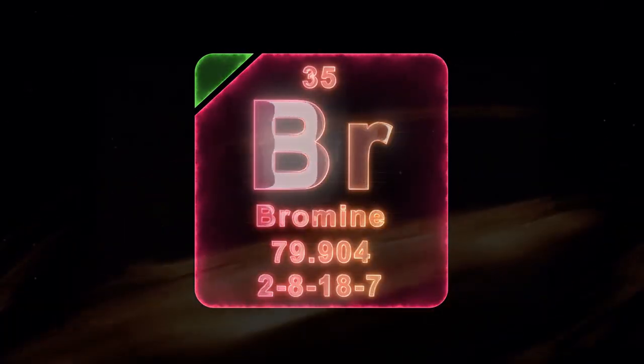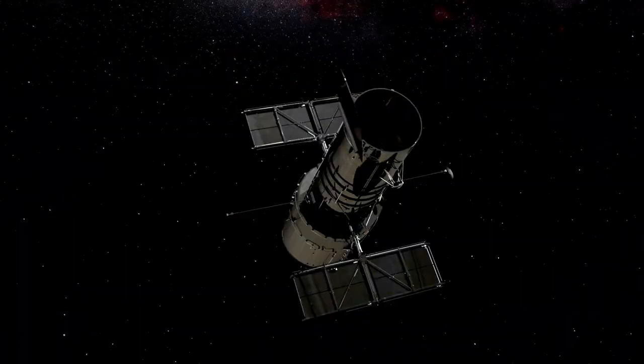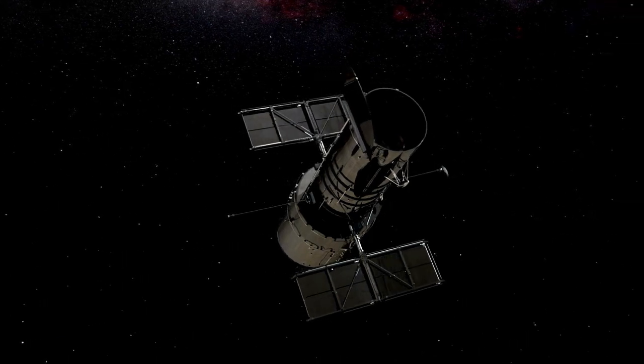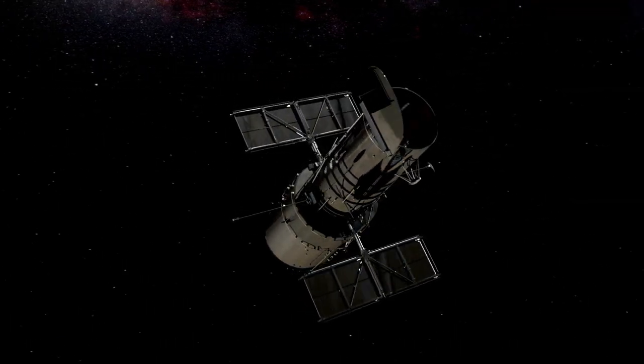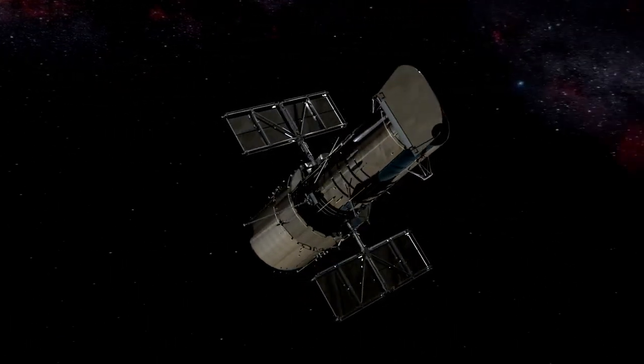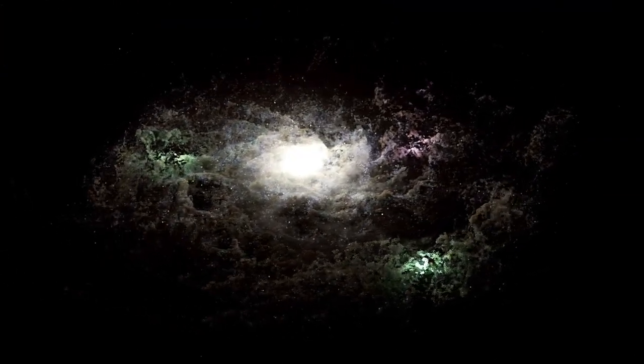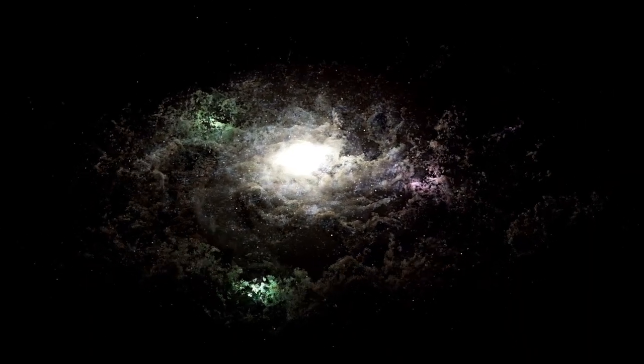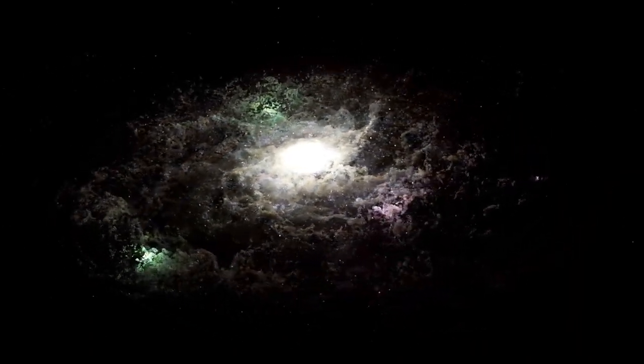According to the standard model of cosmology, these vast structures are thought to form along filaments of dark matter. These filaments act like the scaffolding of the universe, weaving together a vast cosmic web that spans billions of light years. Though dark matter cannot be seen directly, its gravitational pull shapes the motion and formation of galaxies.